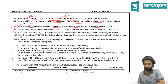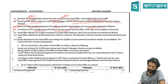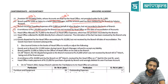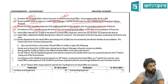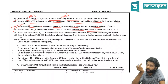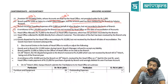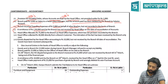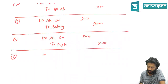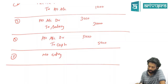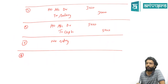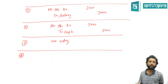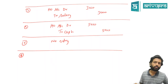Fourth scenario: branch incurred travelling expense of 5,000 on behalf of other branches but not yet recorded. Since inter-branch transactions are routed through HO, the entry is: HO Account debit to Cash 5,000. Fifth scenario: remittance of one lakh fifty thousand sent by the branch has not yet been received by HO. Branch has already passed the entry, so no entry is required in branch books.